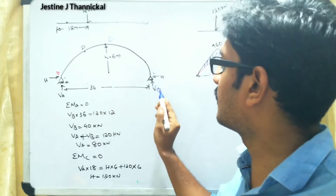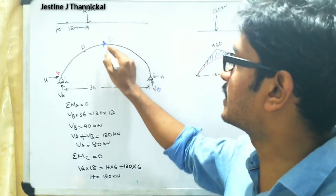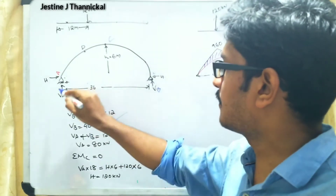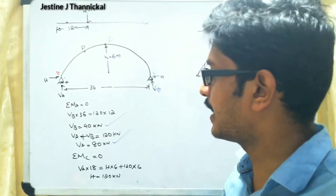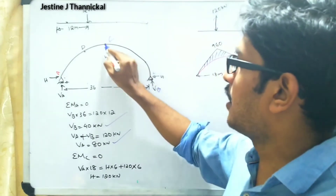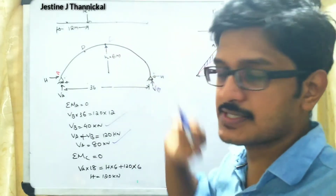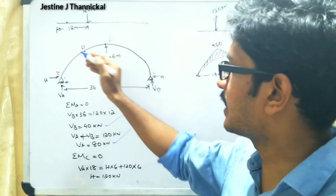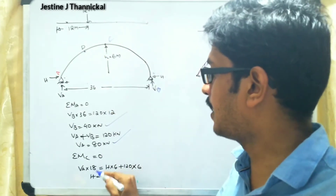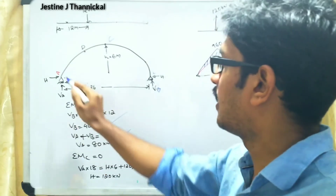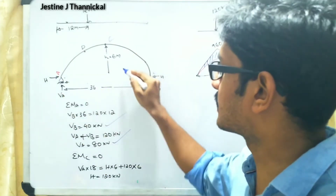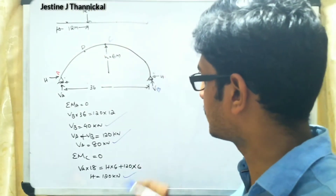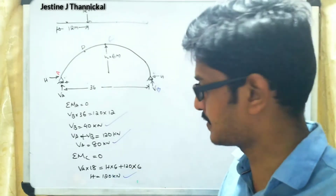Taking moment about A equal to zero, considering VB in the clockwise direction and 120 kilonewtons also in the clockwise direction, we get VB equal to 40 kilonewtons. Then VA plus VB equals 120, substituting gives VA equal to 80 kilonewtons. Taking moment about the crown point C equal to zero on the left-hand side, VA multiplied by 18 (clockwise) minus H multiplied by 6 (anticlockwise) gives H equal to 120 kilonewtons.